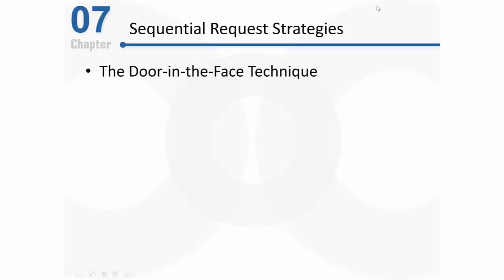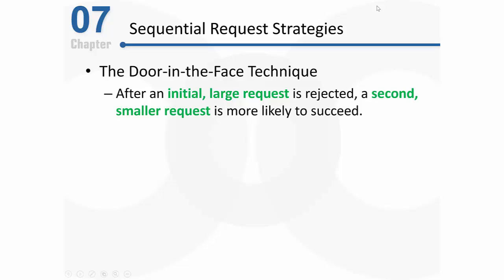The door-in-the-face technique is another two-step technique, but this one begins with an initial large request — one that is likely to simply be rejected — followed by a smaller request that is then much more likely to succeed. For example, if I need $50, I might begin by asking you for $500. That's a lot, so you'd likely say you can't afford to give $500. I'd say I understand, but could you loan me at least $50? And you are more likely to give me $50 than if I had asked for $50 from the start.